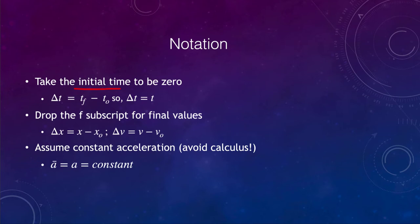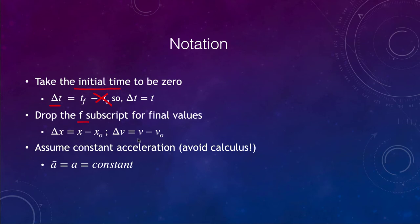It's like working with a stopwatch — you start at time zero and the ending time is just t. Normally we define delta t, the change in time, to be the final time minus the initial time. If the initial time is zero, that term goes away, so delta t is just your time. We also often drop the f subscripts for final values, so the change in x is x — the final position minus the initial position — giving us our displacement. Similarly, the change in velocity is the final velocity minus the initial velocity. We assume constant acceleration, which allows us to avoid calculus.